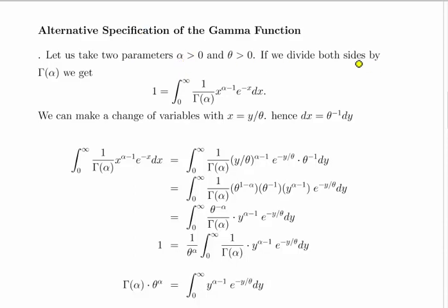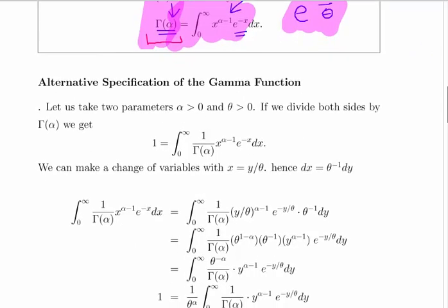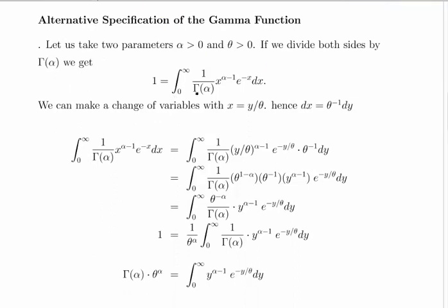Using the definition above, we can divide both sides to get 1 equal to the integral from 0 to infinity of 1 divided by the gamma function of alpha, times X to the power of alpha minus 1, times e to the minus X, dx. We then apply a change of variable: let X equal Y divided by theta, which means dX equals theta to the power of minus 1 times dY. Substituting, we get Y divided by theta to the power of alpha minus 1, times e to the minus Y divided by theta, times theta to the minus 1 dY.